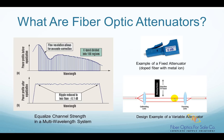Then, the second collimating lens is used to focus the light back into the output fiber. When you move the blocking device inward or outward, you get different attenuation levels.